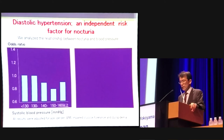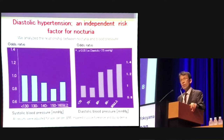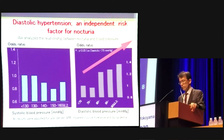We analyzed the relationship between nocturia and blood pressure. Systolic hypertension did not influence nocturia; however, interestingly, diastolic hypertension above 80 mmHg was found to be an independent risk factor for nocturia.